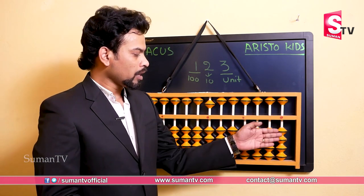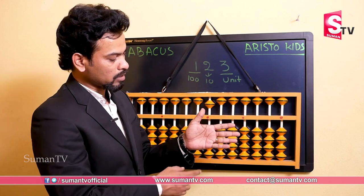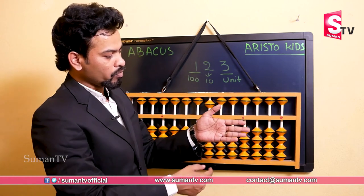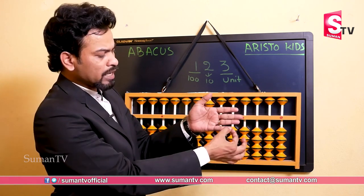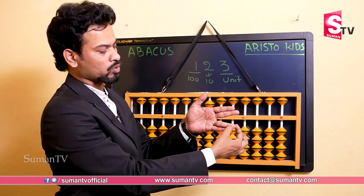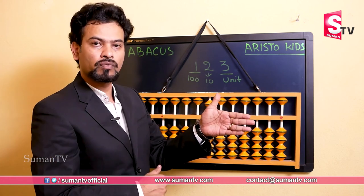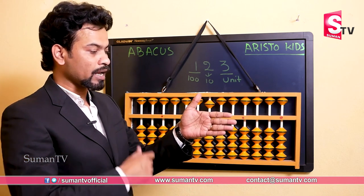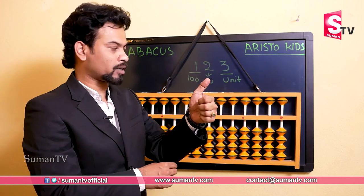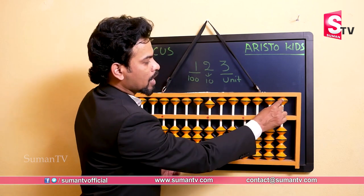In a particular rod there are five beads — four beads towards the downside and one bead towards the upside. In every unit rod, each lower bead has a value of one. For your understanding, think of these as one rupee chocolates and the upper bead as a five rupees chocolate. So the lower beads are one, one, one, one and the upper bead is five.